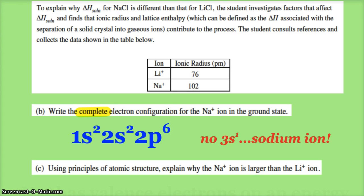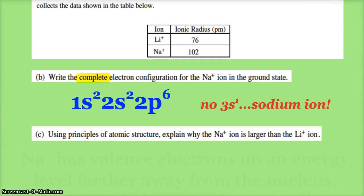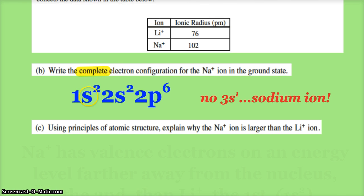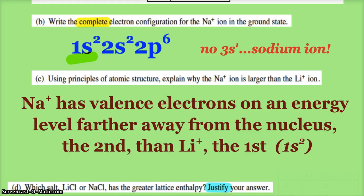Now part C: why is the sodium ion larger than the lithium ion? So all you have to do is compare this. Here's the sodium ion: 1s² 2s² 2p⁶. A lithium ion would simply be the 1s² part because a lithium ion only has two electrons. So you should hopefully easily see the sodium ion has valence electrons on an energy level farther away from the nucleus, the second one, compared to the lithium ion which only has electrons on the first. So the sodium ion has the electrons on a further away energy level.